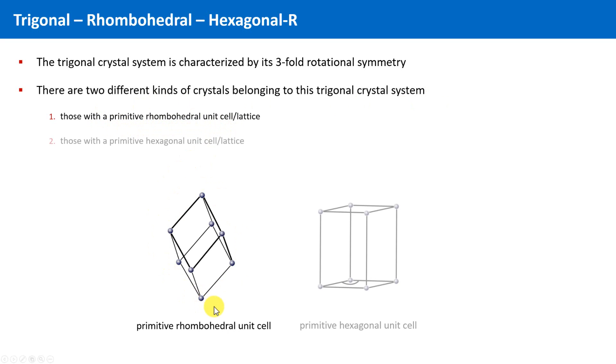And secondly, a primitive cell which is absolutely identical with a primitive hexagonal unit cell or lattice.